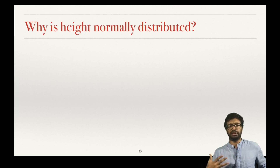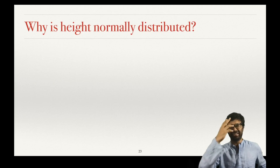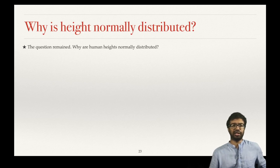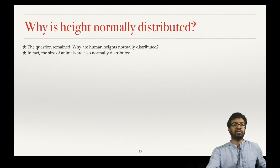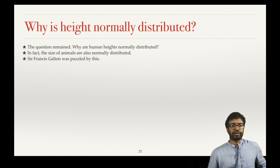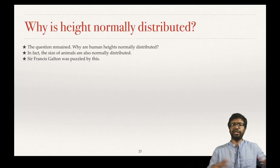There has to be some reason for this, and the size of animals is also normally distributed — animals that grow in the wild are also normally distributed. The person called Sir Francis Galton was also puzzled by this. He was a statistician, mathematician, and geneticist — many things. But in the history of the world, you might call him a villain.